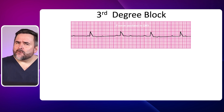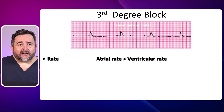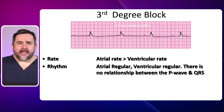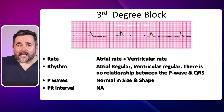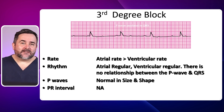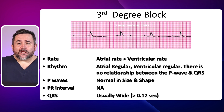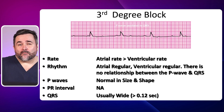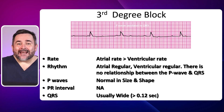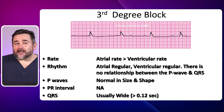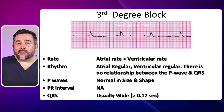Lastly, let's review a third degree heart block, also known as a complete heart block. The atrial rate is more than the ventricular rate. The atrial and ventricular rhythm is regular, and there is no relationship between the P waves and the QRS complexes. The P waves are normal in size and shape. There is no PR interval as the P waves and QRS complexes are not linked to each other. The QRS complexes are usually wide — more than three small boxes or more than 0.12 seconds — because the block is below the His junction. Keep in mind that in third degree block the QRS can be narrow if the block is above the His junction.